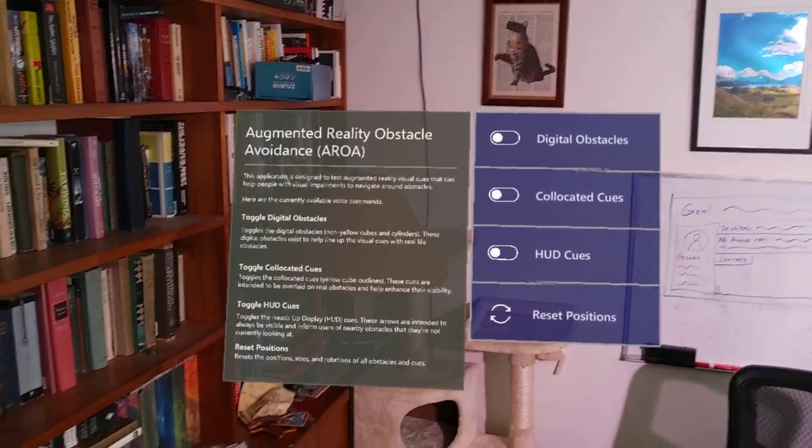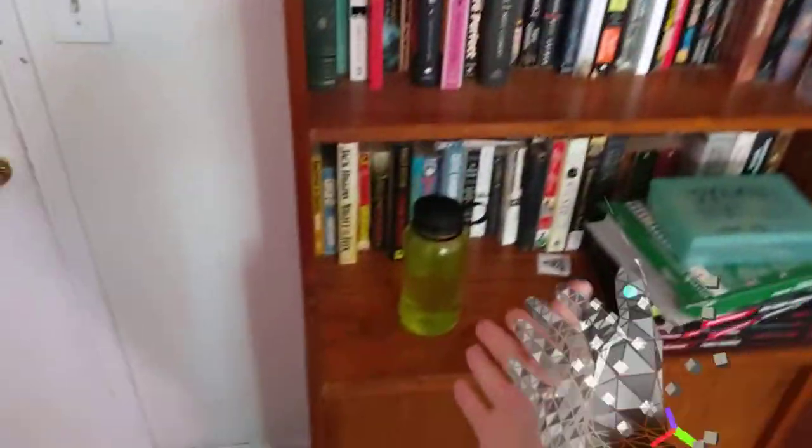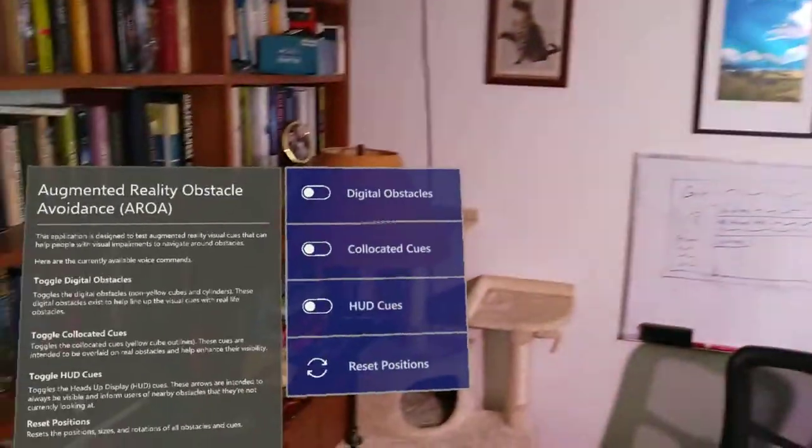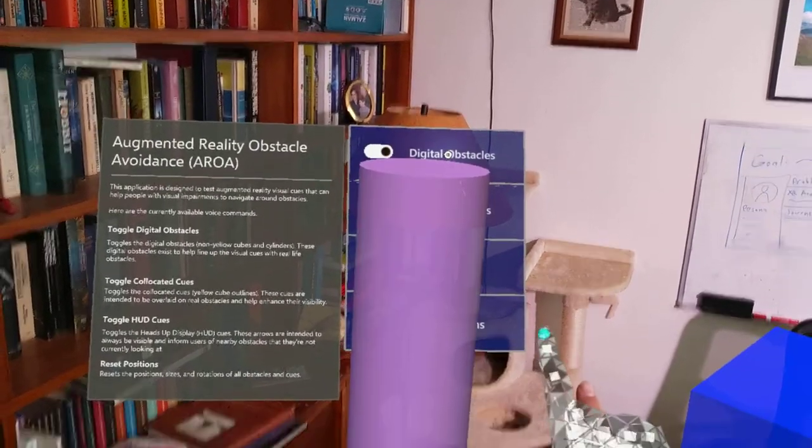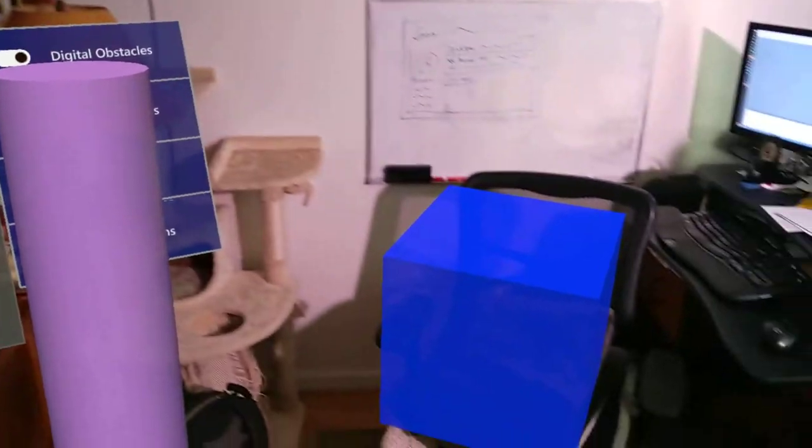We have three sample obstacles we're looking at today: a chair, a lamp, and this water bottle. First, I'm going to show you the digital obstacles that are going to be representing those. Those are our stand-ins. These are simply what we are aiming our HUD cues at for the moment.